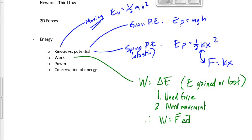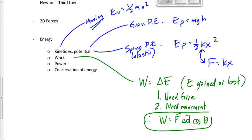Therefore, we can define work as delta E, but we can also say work equals F times delta d, where F is the force and d is the displacement. This equation assumes the force and displacement are parallel to each other. If they're not parallel, we have to include cos theta — theta being specifically the angle between the direction of the push and the direction of movement. If I push it to the right and it moves at 30 degrees, the angle is 30 degrees. If I push it at 30 degrees and it moves at 30 degrees, the angle is zero. Don't just write down an angle because one is given; use it only if it's the angle between the way it's pushed and the way it moves.